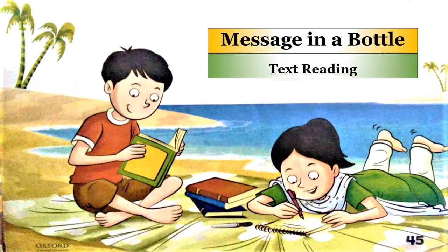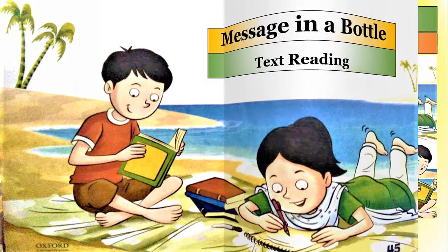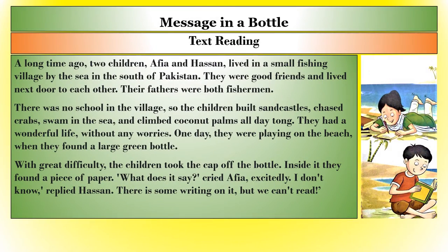I am going to read the text. A long time ago, two children, Afia and Hassan, lived in a small fishing village by the sea in the south of Pakistan. They were good friends and lived next door to each other. Their fathers were both fishermen. There was no school in the village, so the children built sand castles, chased crates, swam in the sea and climbed coconut palms all day long. They had a wonderful life without any worries.